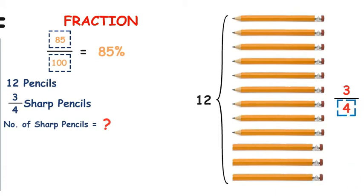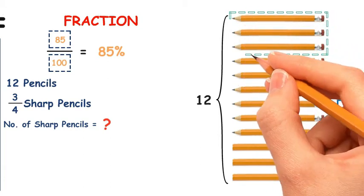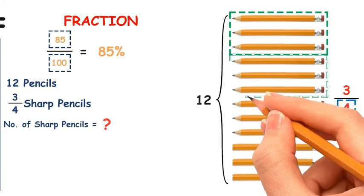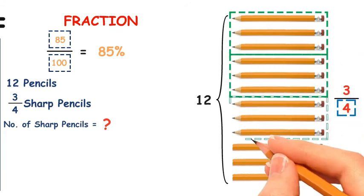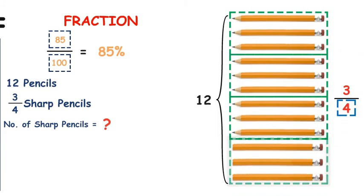The denominator is 4, it means there are total 4 parts of 12 pencils. The numerator is 3, it means 3 parts are sharp.